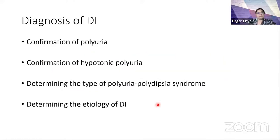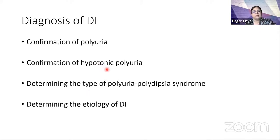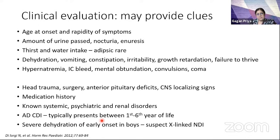Looking at diagnosis, the protocol should follow clear steps. First is confirmation of polyuria. Second, confirmation of hypotonic polyuria, differentiating it from osmotic diuresis. Third, determining the type of the polyuria-polydipsia syndrome — central, nephrogenic, primary polydipsia, or gestational — and thereafter determining the etiology.